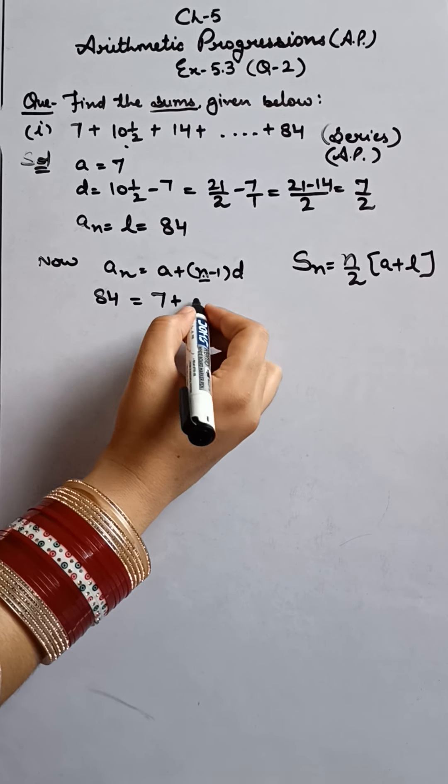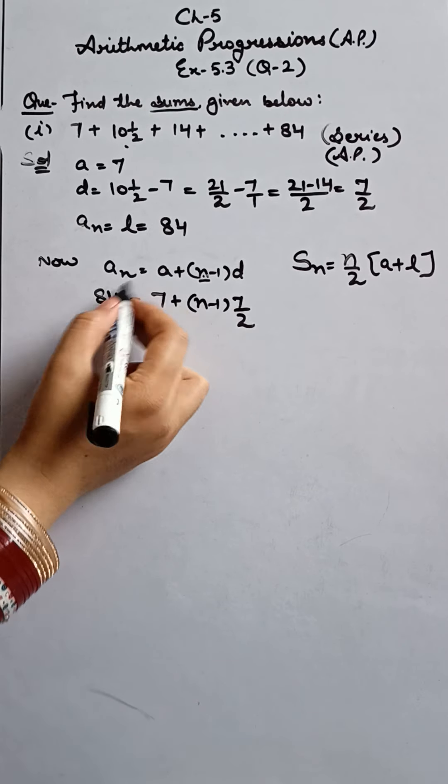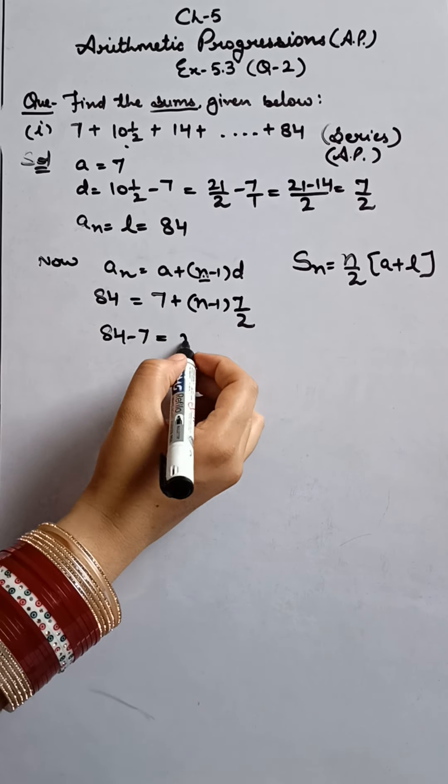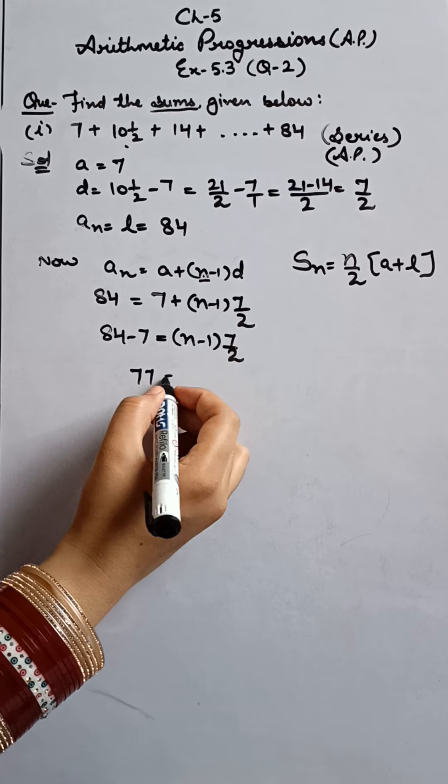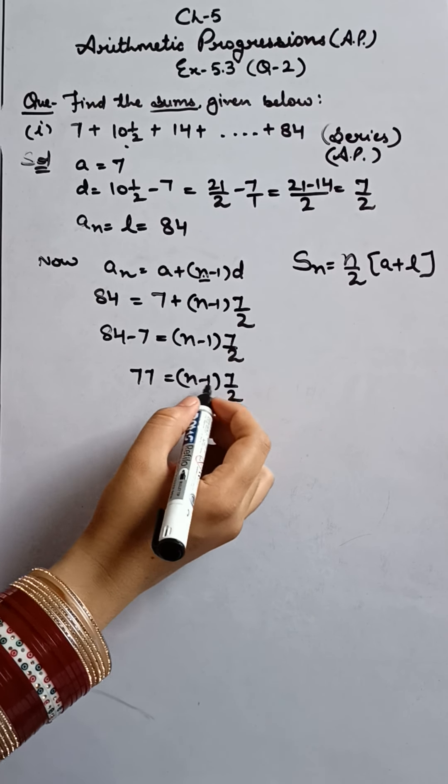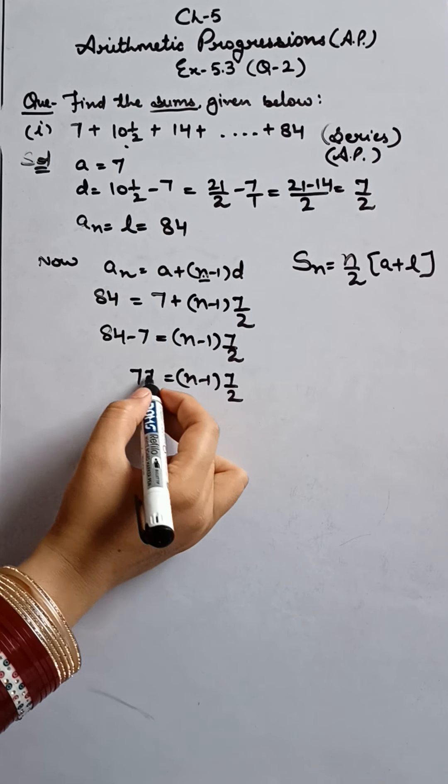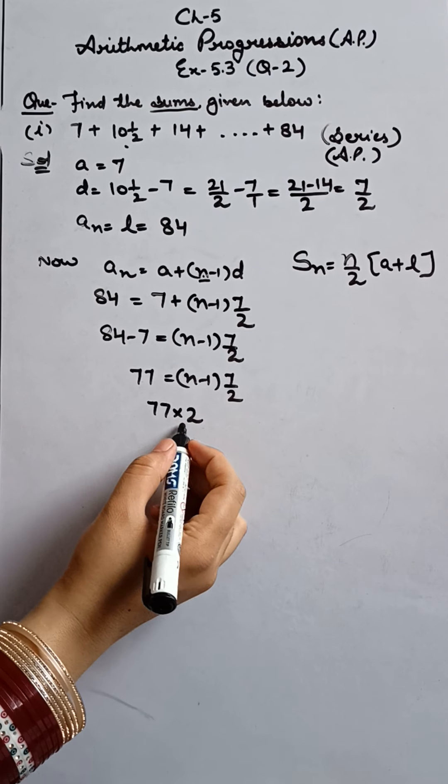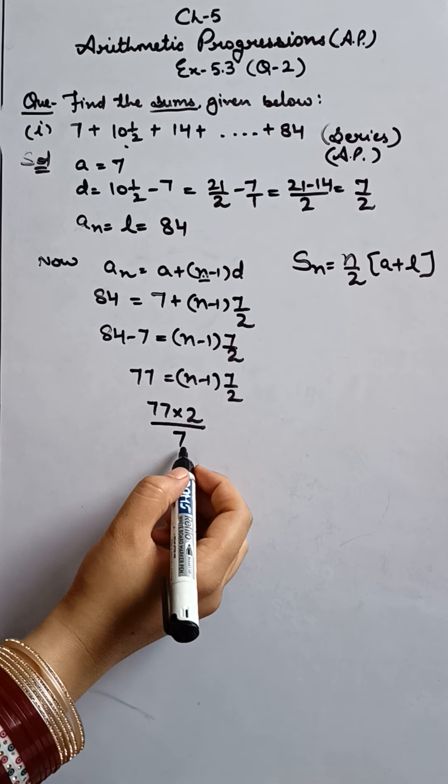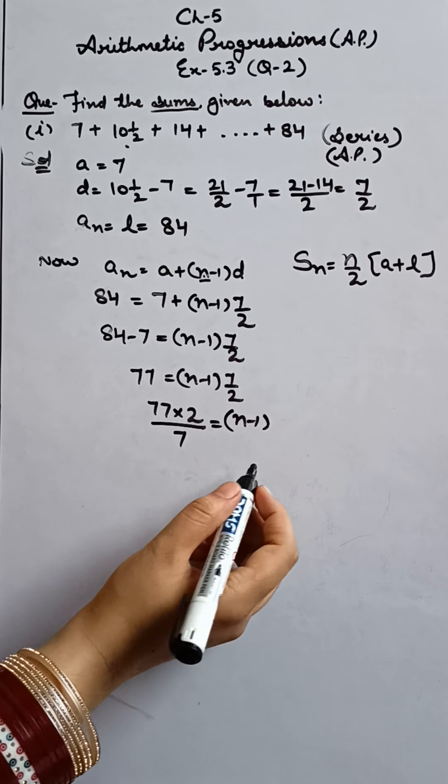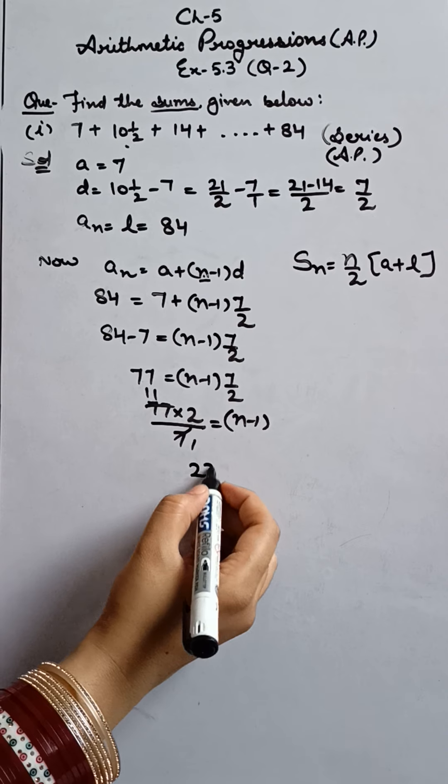Let's put the value. 84 equals 7 plus, N I don't know, minus one, and D is seven upon two. So here, positive seven on this side, it is negative seven. Okay? So when we subtract we will get 77. Now, seven by two multiply with N minus one. Two is in division. So by cross multiplication, two comes to this side and becomes multiply. And seven here is in multiplication, and on this side after cross multiplication, it will become divide. On this side we have N minus one remaining. After solving, we will get 11 into 22.